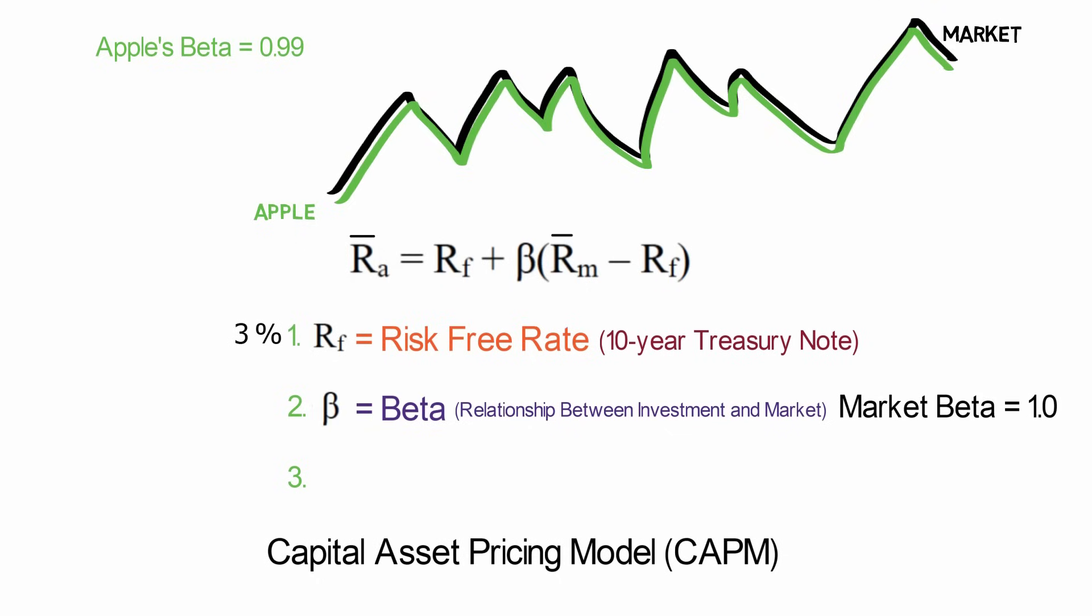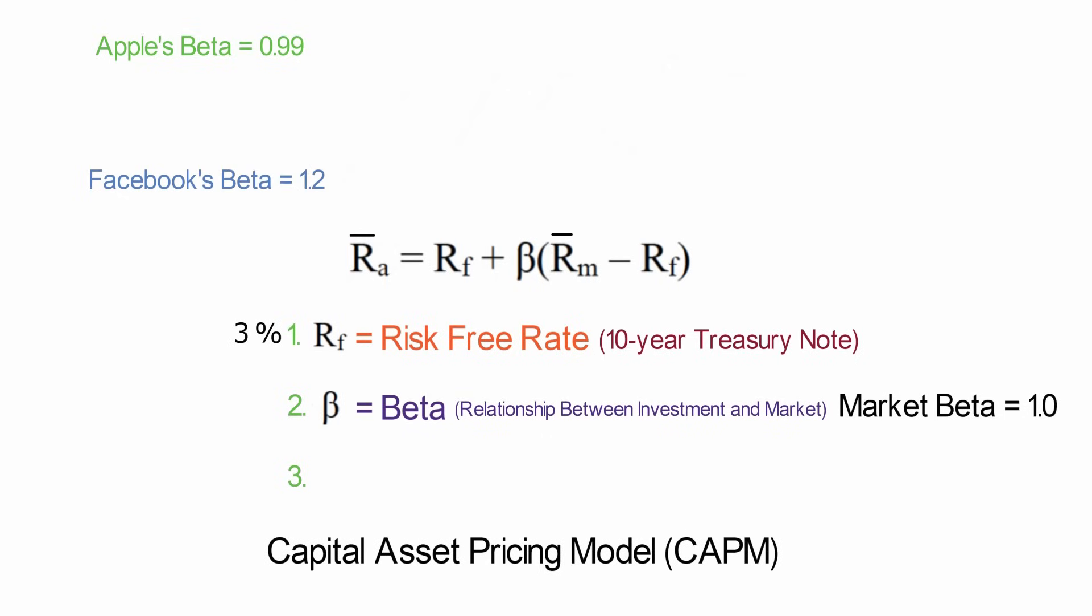Same is true on the downside. The market goes down, Apple's stock will be down just short of 1%. And just to see how this impacts things, let's throw a second stock in there. Right now, Facebook has a beta of 1.2. So if the market moves up or down 1%, Facebook will move up or down 1.2%.